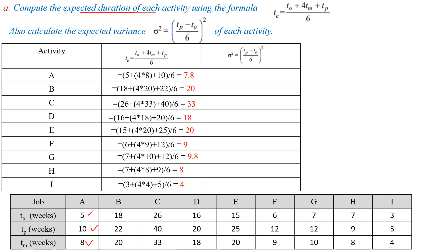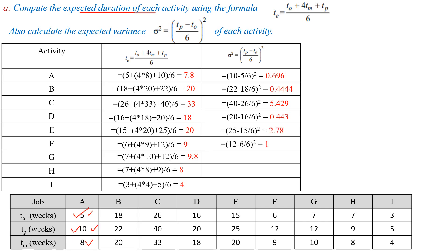Next, we calculate sigma² for all activities using (Tp − T0) / 6 whole squared. For activity A: Tp = 10, T0 = 5, so (10−5)/6 whole squared = 0.696. For activity B: 0.444; activity C: 5.429; activity D: 0.443; activity E: 2.78; activity F: 1; activity G: 0.694; activity H: 0.111; and activity I: 0.111.